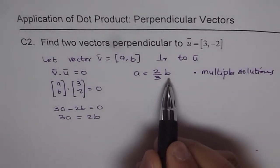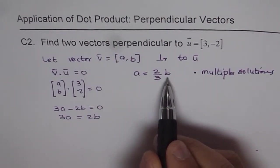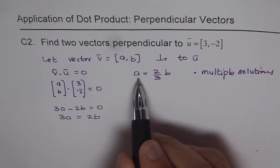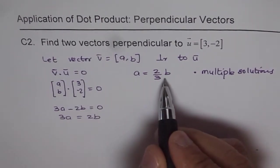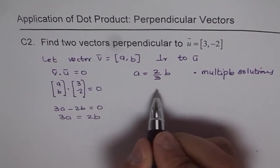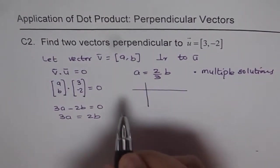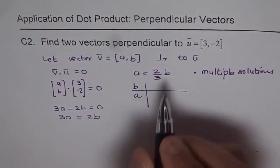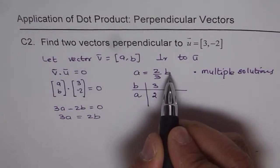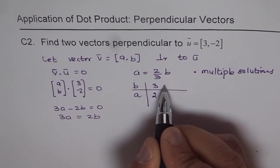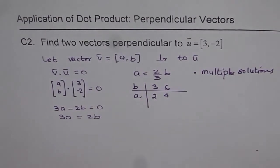Since the value of a is dependent on b, if you take b as 1, a is 2/3. You can take many values of b and get different values of a. Best values to take is to avoid fractions. Let's pick some values of b and write down the value of a. If I write b as 3, I get a as 2. If I write b as 6, it will be 4. I can get a lot of values.